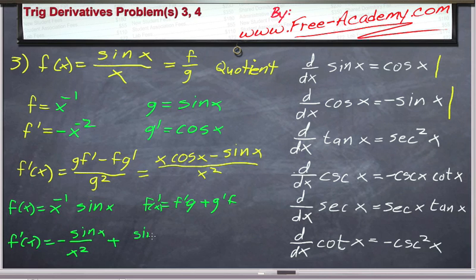And this is going to be plus g prime, which is cosine of x, times f, which is 1 over x. Sorry, g prime is cosine of x. That looks a lot better.